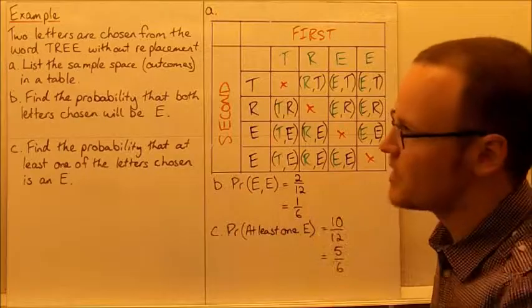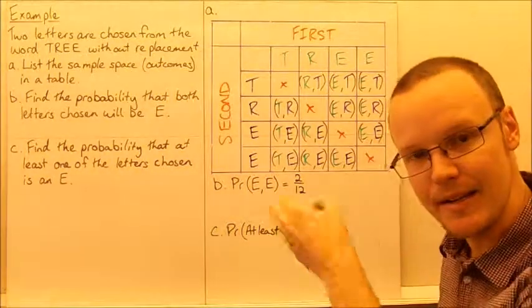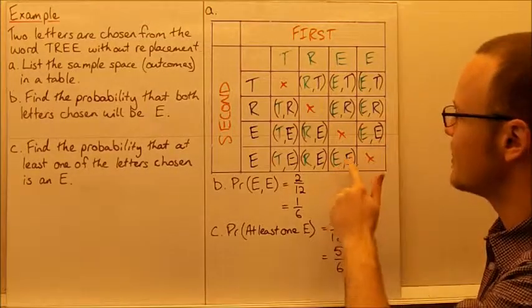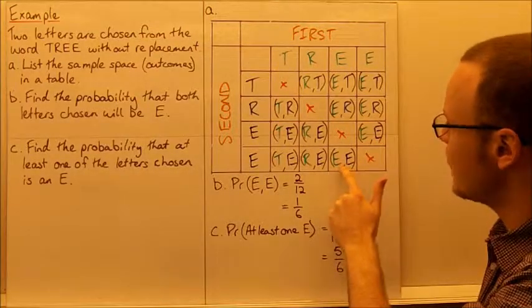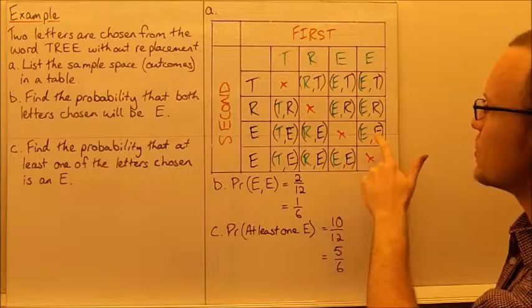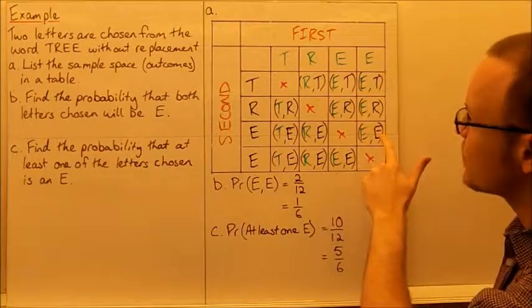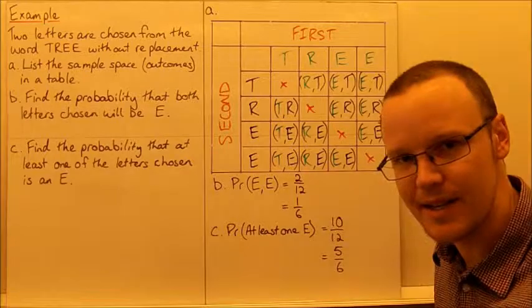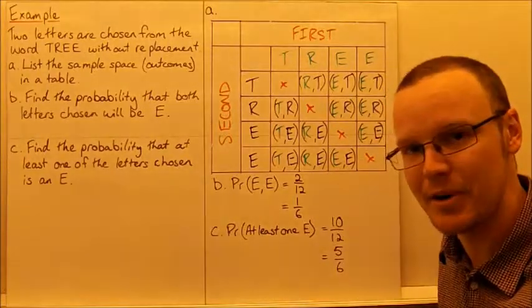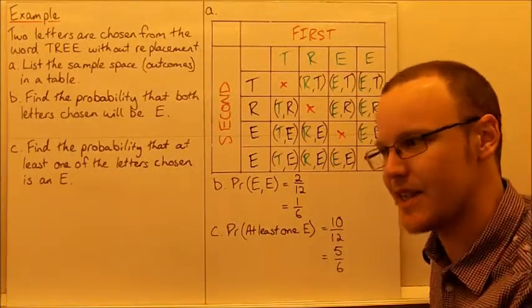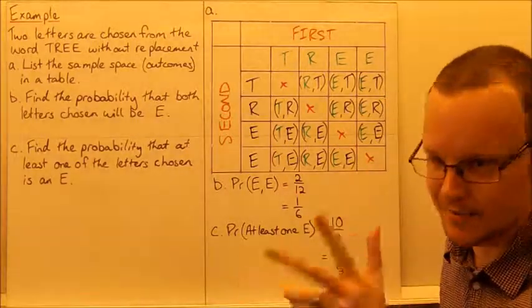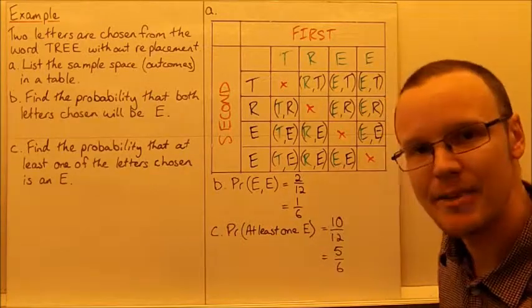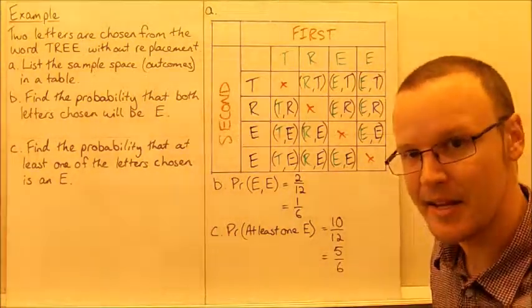The probability that both letters chosen will be E means E then E. The only two outcomes that are E then E are these two here. We're choosing the E first from this side and then choosing the other E there. There are only two possible ways that can occur. If you choose one E, then to get another E you have to choose the other E and vice versa. That's two possible outcomes out of the total of 12, so the probability is 2/12 or 1/6.